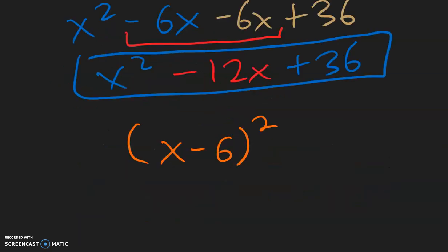Now I want to show you a shortcut way to get the same answer. First, you take the term in the front and multiply it by itself: x times x gives us x squared. So that's front times front.